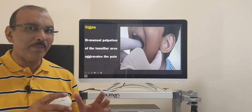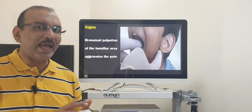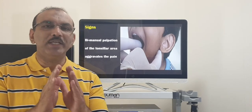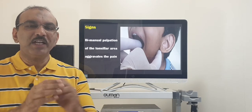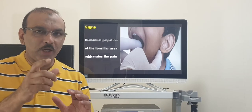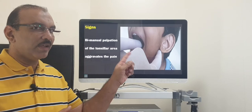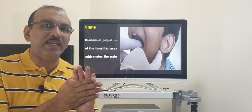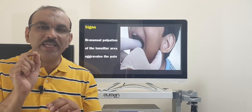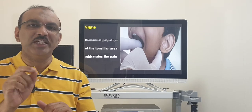When we do bimanual palpation — one finger over the tonsil and another at the angle of the mouth — for a normal person, we can palpate only the tonsils. But if it is stylohyoid syndrome and the styloid process is 4 centimeters in length, when you do bimanual palpation, the finger inside over the tonsil area can feel the elongated styloid process, and the patient will experience pain or discomfort — the same discomfort he is always experiencing.